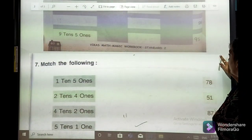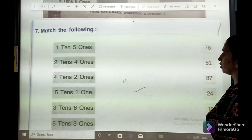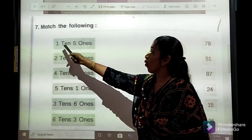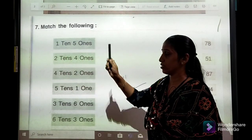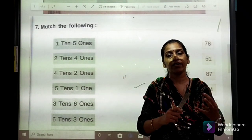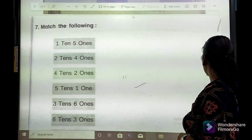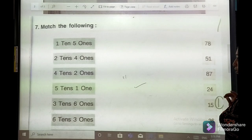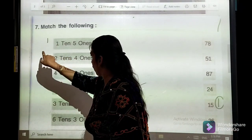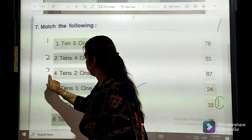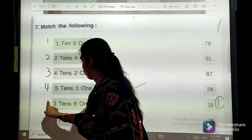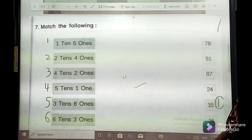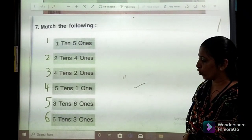Here comes another question. Match. Now, I am going to get an easy one. 1 ten and 5 ones. 1 ten and 5 ones means 15. So, we will label the number 1 over here.